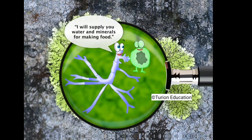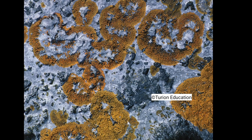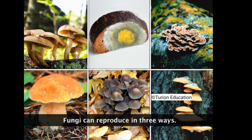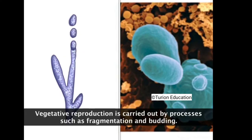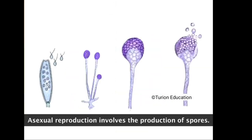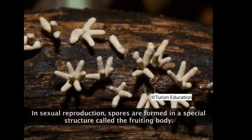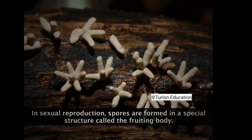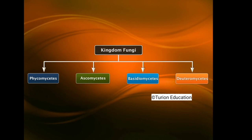Fungi can reproduce in three ways: vegetative reproduction by fragmentation and budding; asexual reproduction by producing various types of spores; and sexual reproduction where spores are formed in a special structure called the fruiting body. Based on structure and reproduction, fungi are classified into four major classes: phycomycetes, ascomycetes, basidiomycetes, and deuteromycetes.